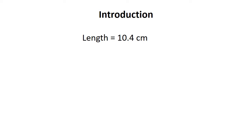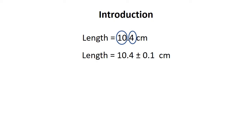Suppose we measure the length of a piece of paper with a centimeter scale and get a result of 10.4 centimeter. In this, 10 is a certain digit and 4 is an uncertain digit. We are not sure about the last digit and uncertainty in that last digit is ±1. So the result would be written as 10.4 ± 0.1 centimeter.